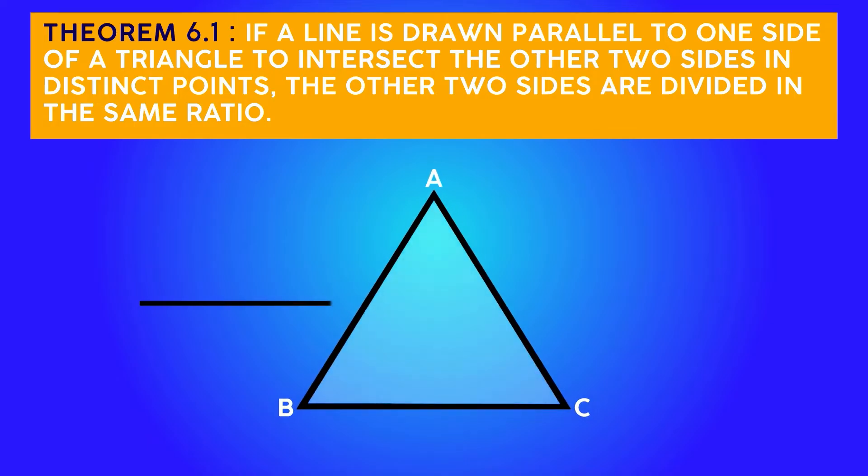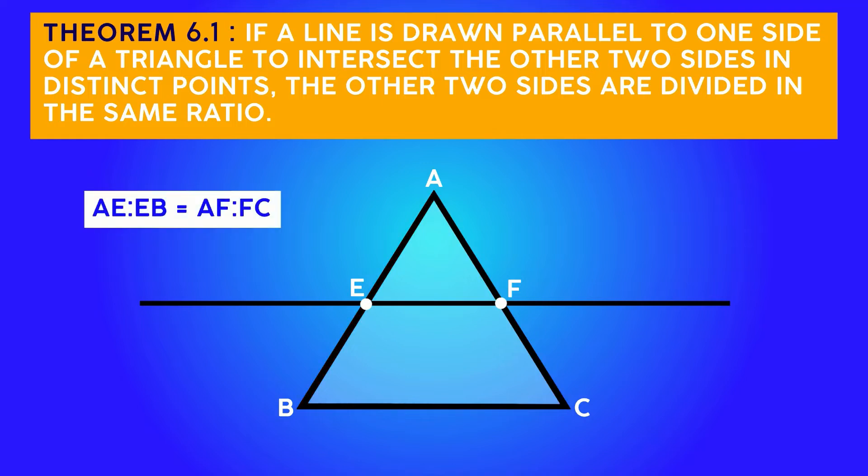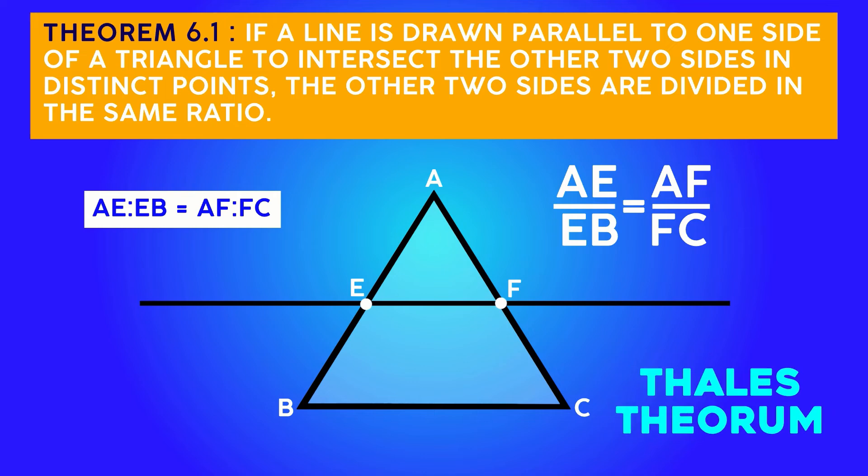Theorem 6.1: If a line is drawn parallel to one side of a triangle such that it intersects the other two sides at two distinct points, then these two sides are divided in the same ratio, which means AE by EB equals AF by FC. This is known as the Thales theorem or the basic proportionality theorem.